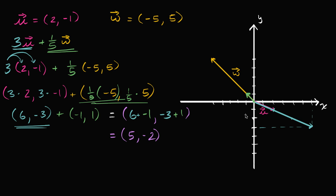We can also see that visually. Starting with the blue vector three u, if we add the green vector one-fifth w, we start at the head of three u and move negative one comma one — one to the left and one up. Using the head-to-tail method, the head of the first vector is where the tail of the next vector starts. Starting at the tail of three u at the origin and bringing it to the head of the second vector, we again get the vector five comma negative two — x component five, moving five to the right and two down.